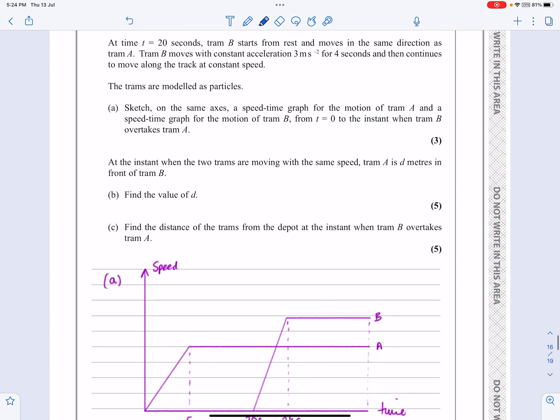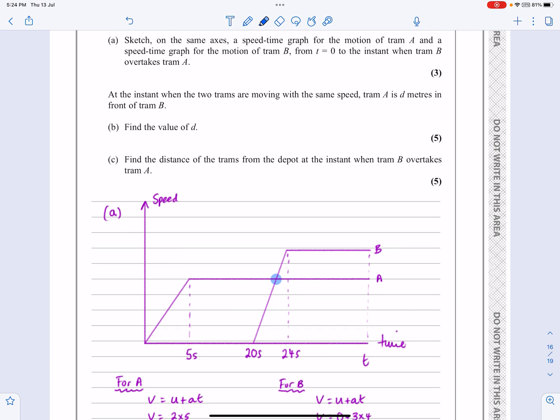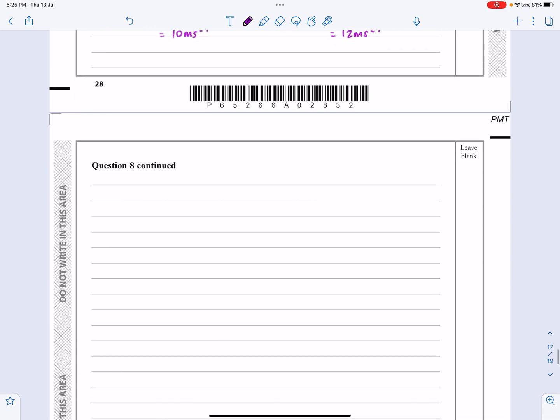Okay, on to part B then. So for part B it says, at the instant when the two trams are moving with the same speed, that's here, at the instant when the two trams are moving the same speed, A is D meters in front of B, what's D? So what they're really saying is, can I work out this time first of all, I'm going to have to work out that time there. Once I've got that time I'll be able to work out how far this one has gone at that time, how far this one has gone at that time and then D will be the difference between those two.